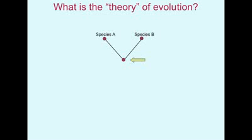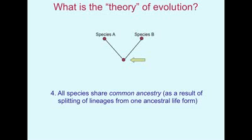This is Proposition 4, which is sort of the reverse side of Proposition 3. That is, if you have a splitting process but you look at it backwards — and this is what Richard did in The Ancestor's Tale — you see that you have common ancestors. Every pair of species on Earth, no matter how closely or distantly related, if you go back far enough into the past, you'll find a single ancestral species that gave rise to them both. All species share a common ancestry as a result of lineage splitting from one ancestral life form.